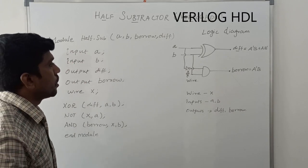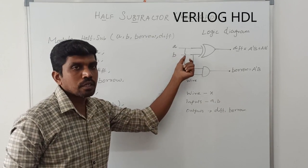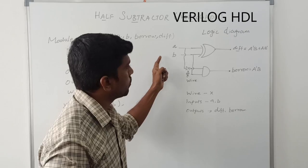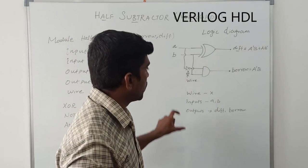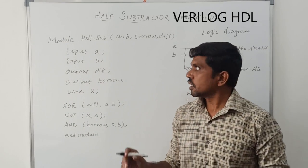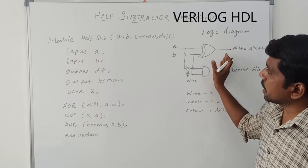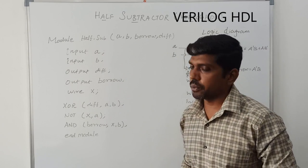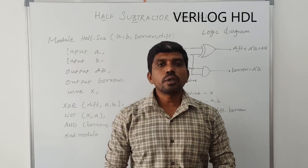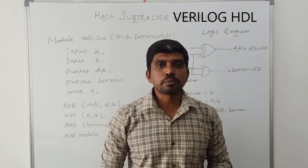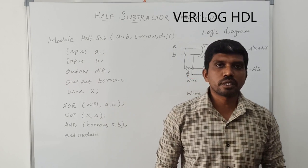This is the simple program of half subtractor. First, you draw the logical diagram. Then, you assign the input variable and output variables. After that, you are just converting this logical diagram into Verilog HDL program. Thanks for watching my channel. If you are watching first time in my channel, kindly subscribe and support us to make lot of videos. Thank you.